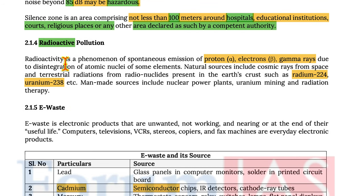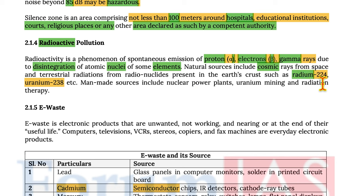Radioactivity is a phenomenon of spontaneous emission of protons (alpha particles), electrons (beta particles), and gamma rays due to disintegration of atomic nuclei of some elements. Natural sources include cosmic rays from space and terrestrial radiation from radionuclides present in the earth's crust, such as radium-224 and uranium-238. Man-made sources include nuclear power plants, uranium mining, and radiation therapy.